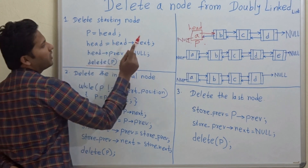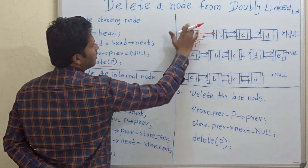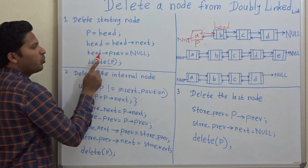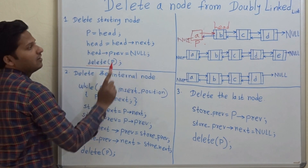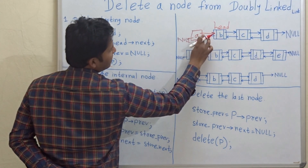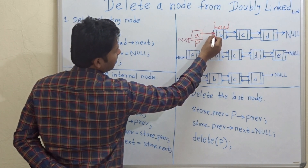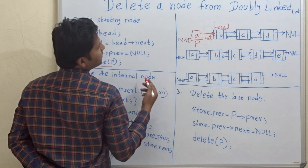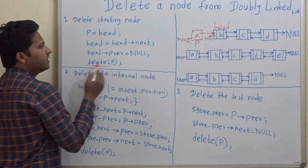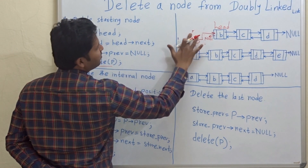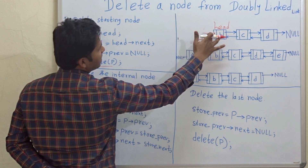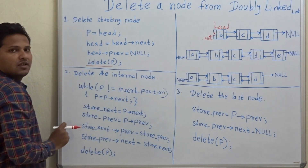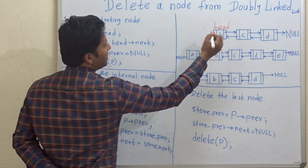Now head equals head->next, so head will go to the next node. Then head->previous equals null, so this previous pointer of head will be pointing to null. Then delete p — when we delete p, this pointer also gets deleted automatically. We free this memory. This is how we delete the starting node.